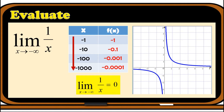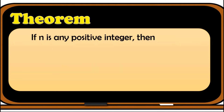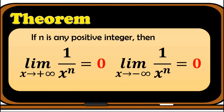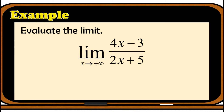Looking at the graph of this function, as we move to the left along the x-axis toward negative infinity, the graph gets closer and closer to zero. From these two examples, we derive the theorem for limits at infinity: if n is any positive integer, then the limit of 1/x^n as x approaches positive infinity equals zero, and as x approaches negative infinity equals zero as well.